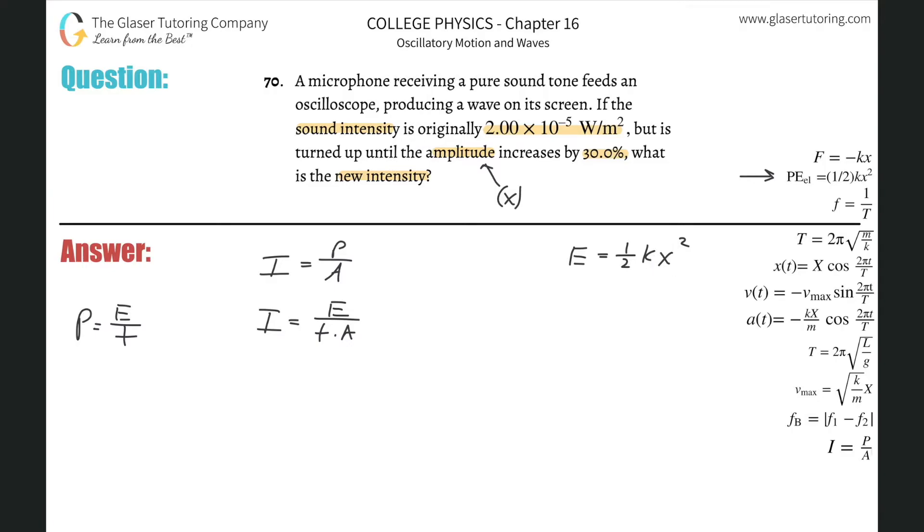This x is the amplitude. Now we can basically substitute this term one half k x squared into the energy in my intensity equation. So this is just one half k times x squared all over time times the area.